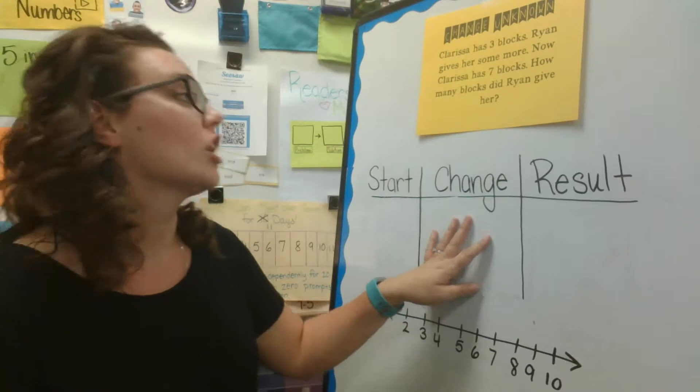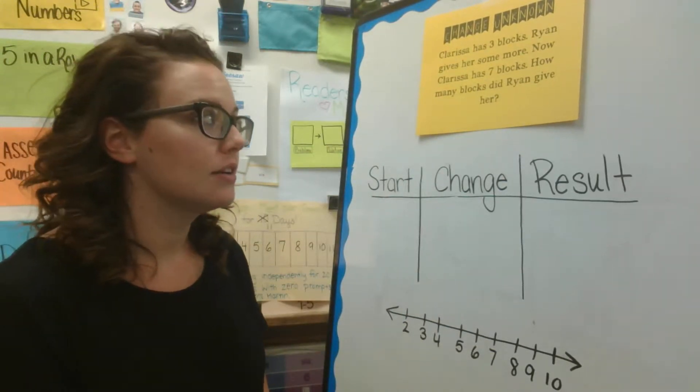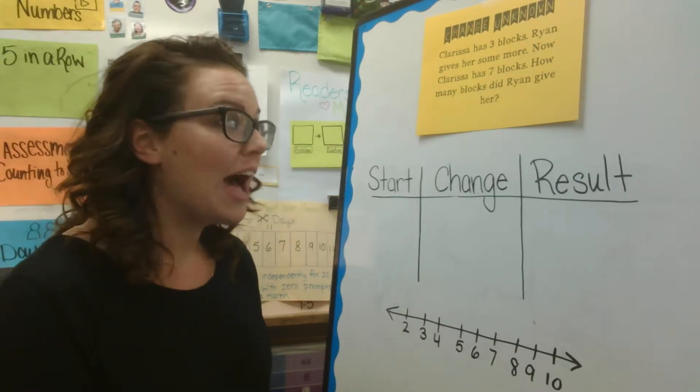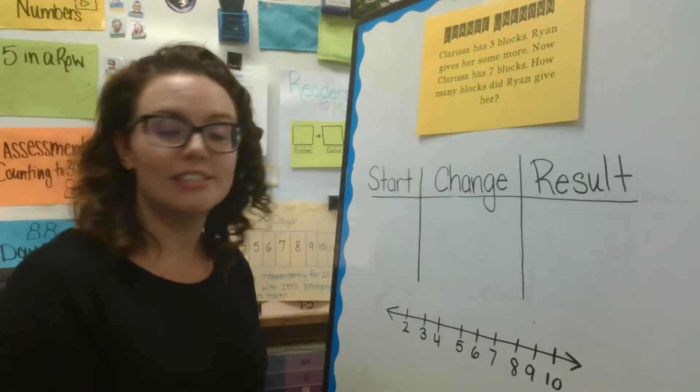Okay, let's get started. Clarissa has three blocks. Ryan gives her some more. Now, Clarissa has seven blocks. How many blocks did Ryan give her?